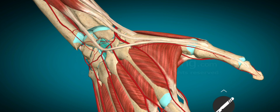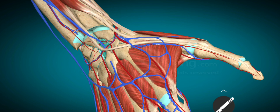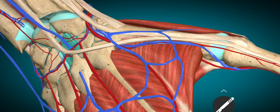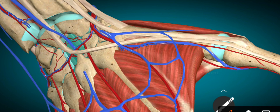The second content of the anatomical snuff box is the cephalic vein, which is not visible in this picture. The third content is the branches of the radial nerve, which are present just under the skin. This was all about the anatomical snuff box. For more videos, subscribe, like and share. Thanks for watching.